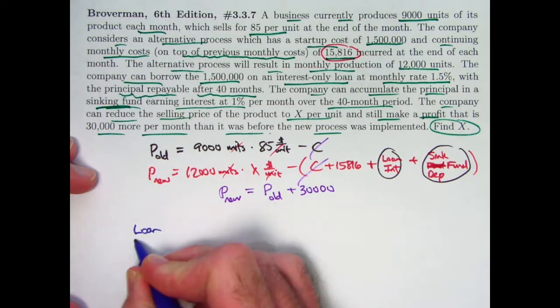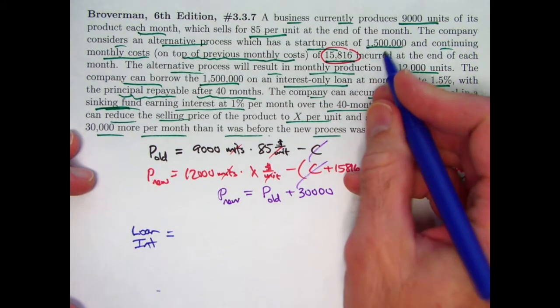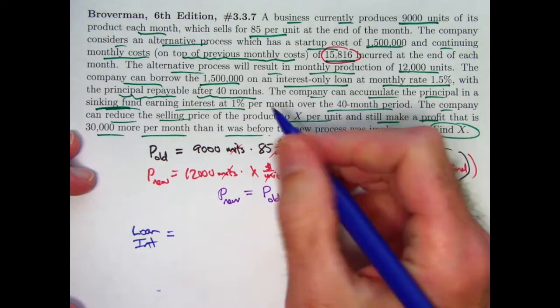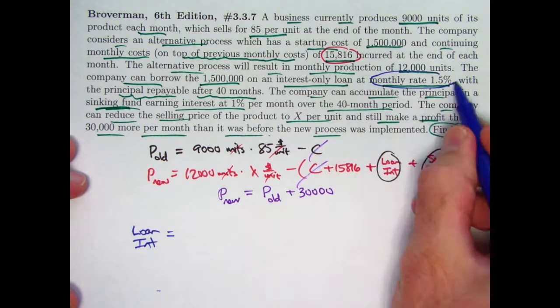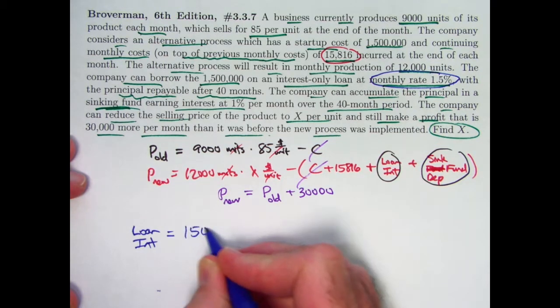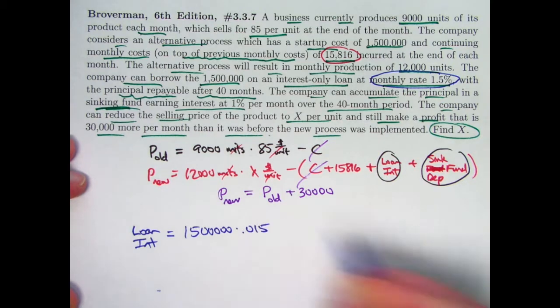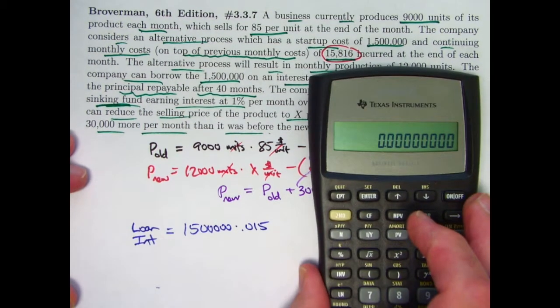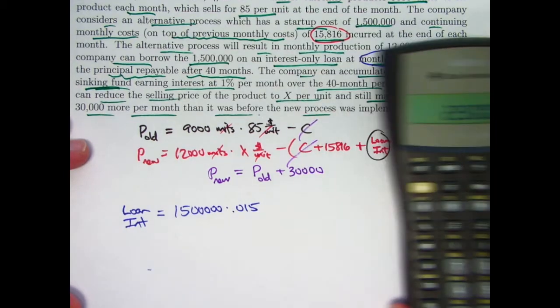All right. What's the loan interest every month? It's a $1.5 million loan. Dollars if you like. The interest for that loan is 1.5%. So the loan interest is $1.5 million times 0.015. 1.5 million times 0.015. $22,500.